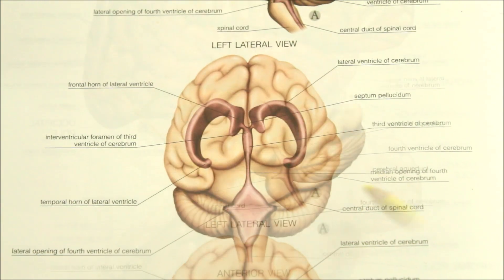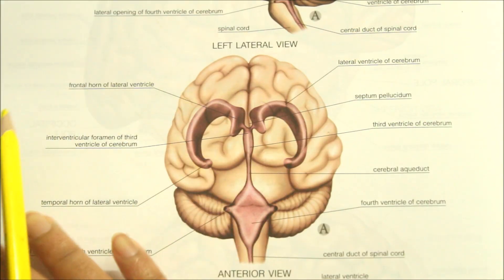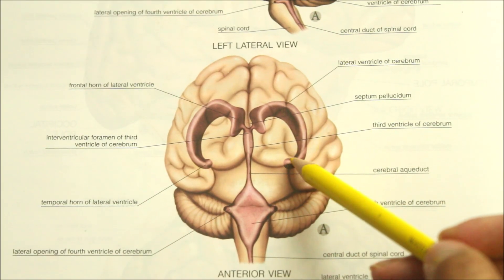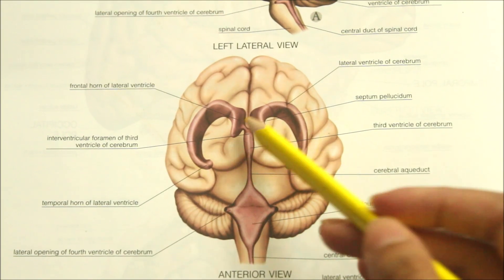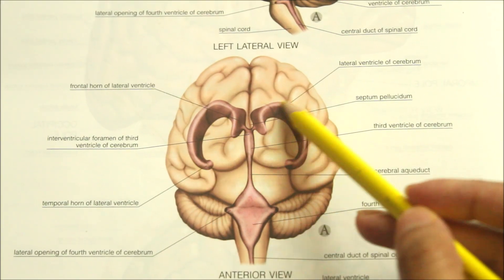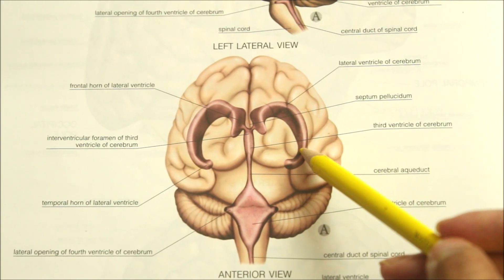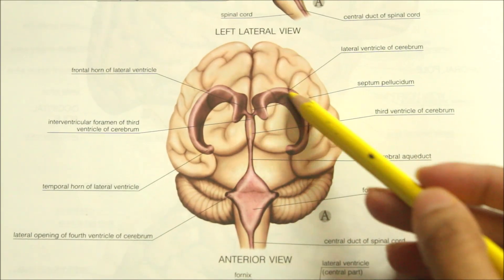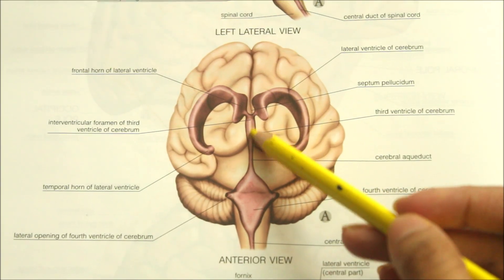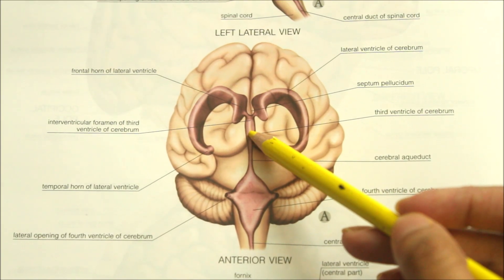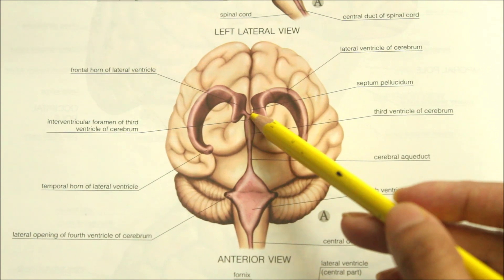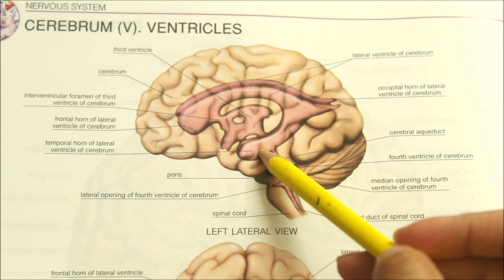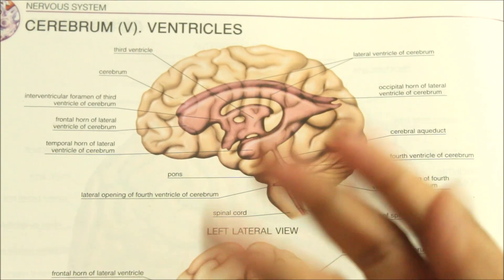Looking at the lateral ventricle in the anterior view, the lateral ventricles are two large cavities of the ventricular system of the human brain and contain cerebrospinal fluid. The two irregular cavities are situated one in each cerebral hemisphere. Each lateral ventricle communicates with the third ventricle of the cerebrum through an interventricular foramen, also called the foramen of Monroe.